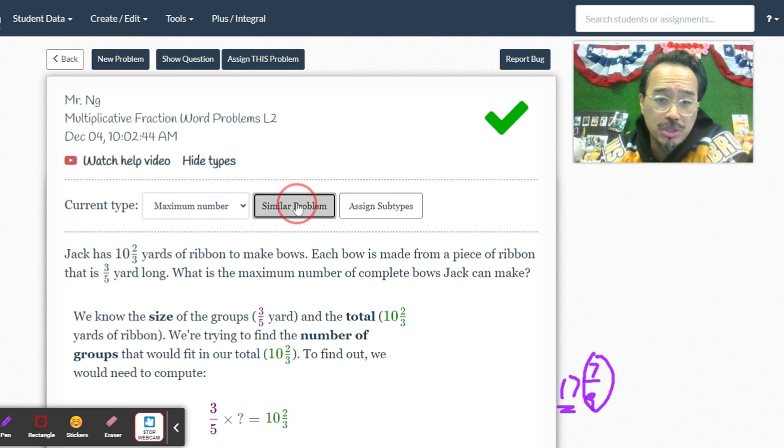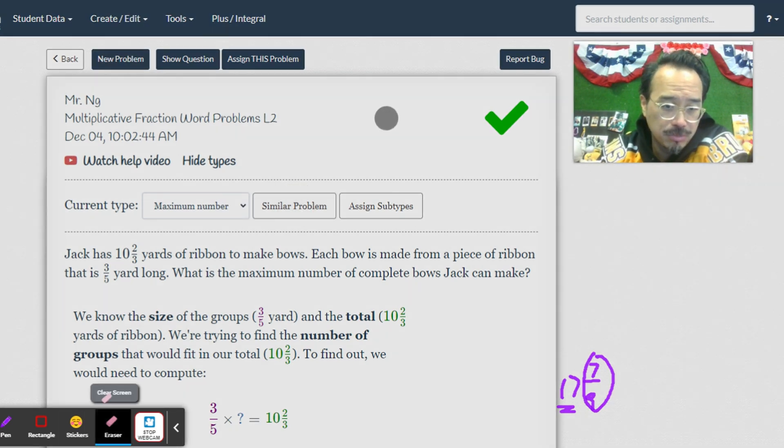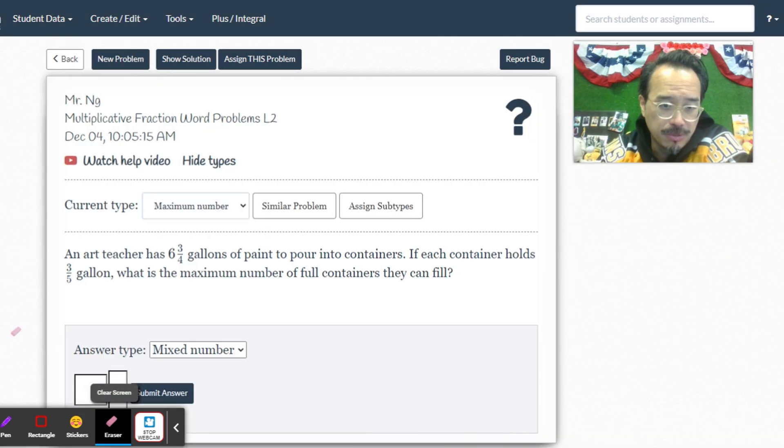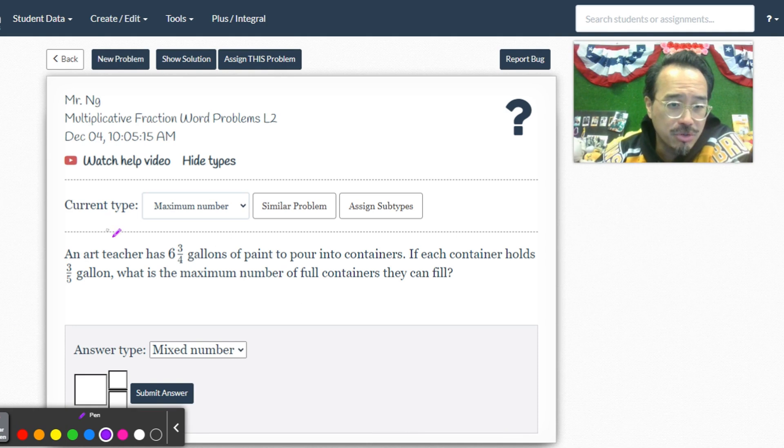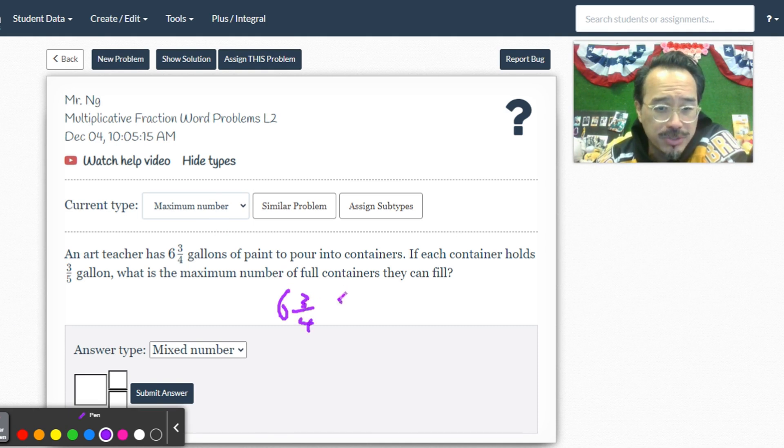Let's do one more just to make sure. For this one, an art teacher has six and three-quarter gallons of paint. Same thing: how many times does three-fifths go into that? Six and three-fourths: that's four, six, twenty-four, twenty-seven times five over three. Nothing to cross cancel.